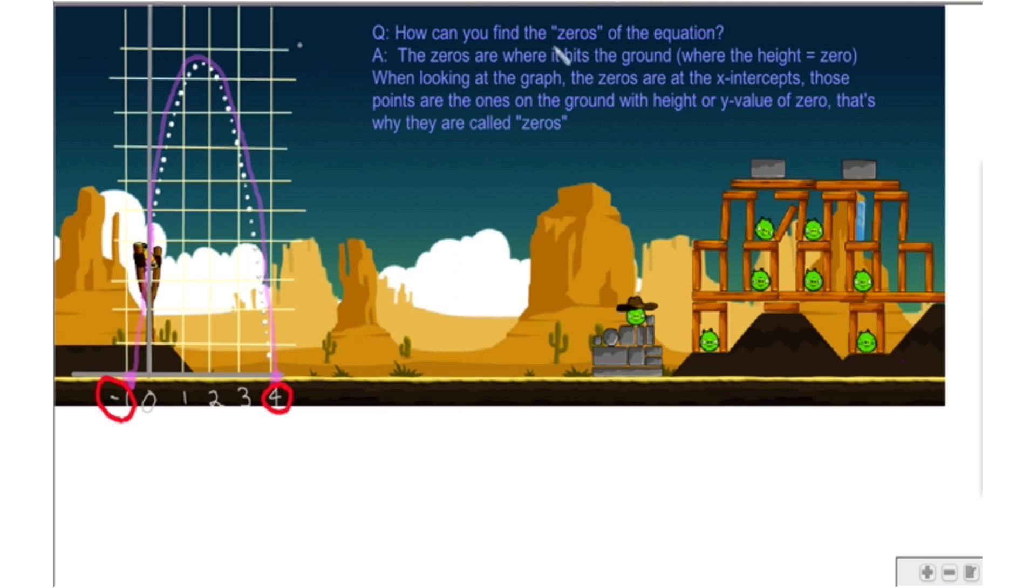The reason why I want you to draw that graph is I want to talk about how can you find the zeros of a quadratic equation. I'd also like you to copy down this paragraph here. The zeros are where the graph hits the ground, where the height equals zero. When you're looking at a graph, the zeros are the x-intercepts. Those points are the ones on the ground with height, or y-value, of zero. And that's why they're called the zeros.